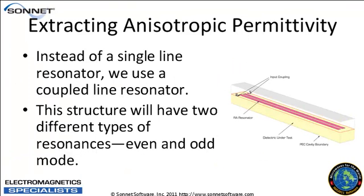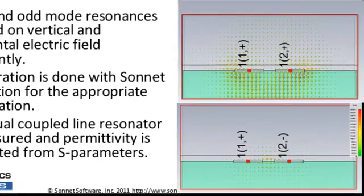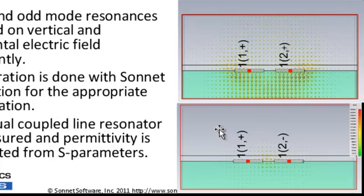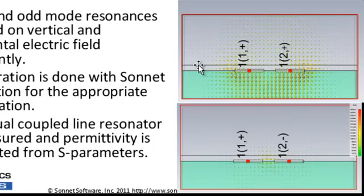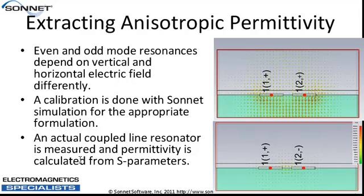Building on that, we switch from a single resonator to a coupled line resonator, which has two different resonances: an even mode and an odd mode. Each resonance has a different dependency on vertical and horizontal permittivity. In the even mode, current is equal in magnitude and in the same direction on both lines, so the electric field is primarily vertically oriented. In the odd mode, current is equal in magnitude but opposite in direction, and the field is primarily horizontally oriented. It's not perfectly one-to-one, so we do a calibration with Sonnet simulation data to convert even and odd mode permittivity into vertical and horizontal permittivity.